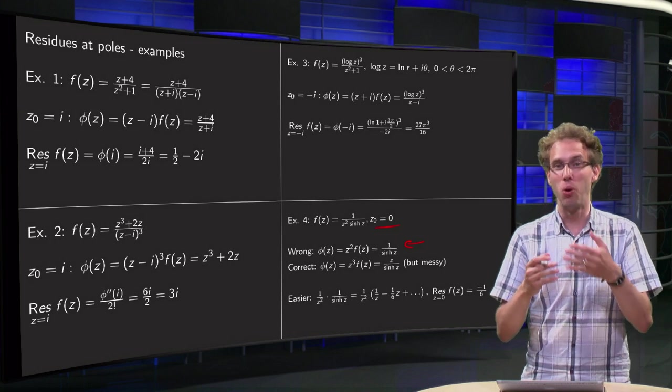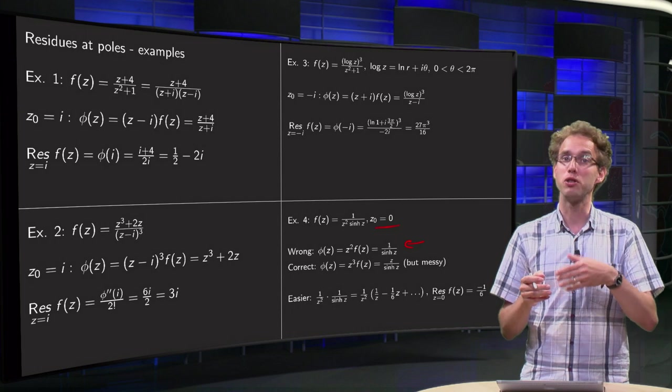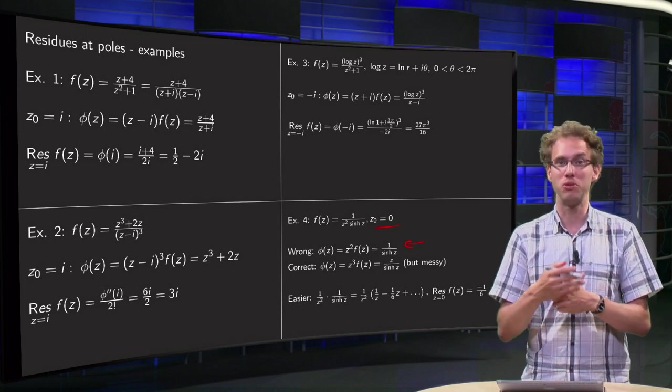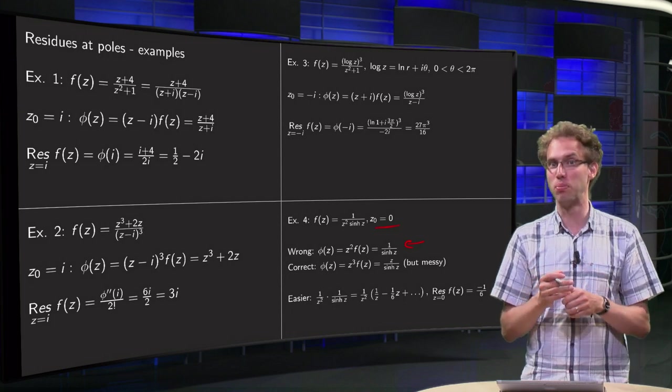Even if you do this wrong, if you underestimate the size of the pole, then you automatically notice that, because you get some infinity when you compute your residue. So, in that sense, it's not a problem.